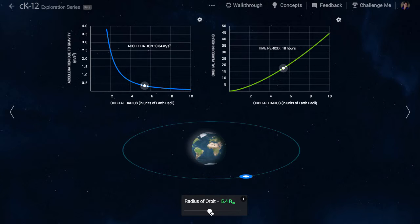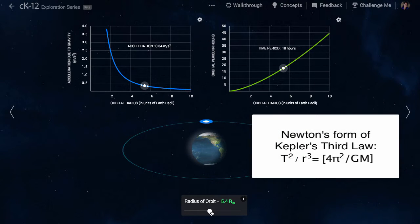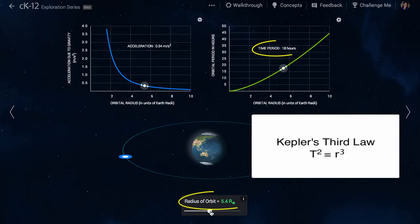Combining all of these equations, we can solve for the radius required to get an orbit with some time period T. This equation is known as Newton's form of Kepler's third law. As you can see, the square of the period is proportional to the cube of the orbital radius, a relationship first discovered by Johannes Kepler.